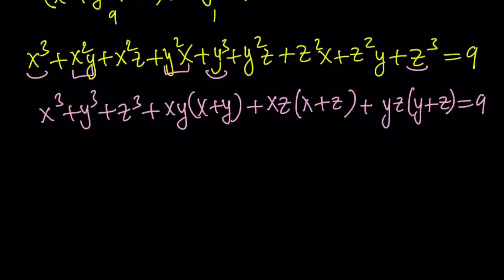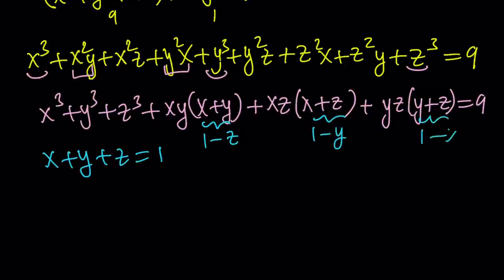Now I don't have anything for the pairwise sums like x plus y or x plus z, but I have x plus y plus z. But I can use it. x plus y plus z is equal to 1. So from here we can replace x plus y with 1 minus z, x plus z with 1 minus y, and y plus z with 1 minus x.